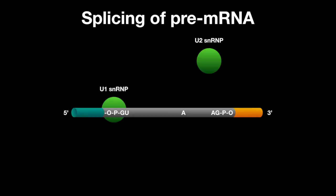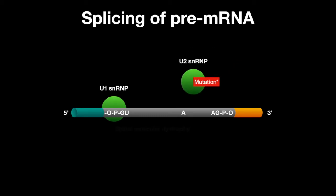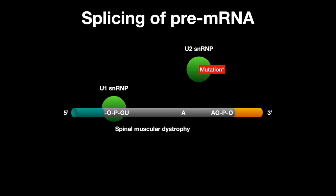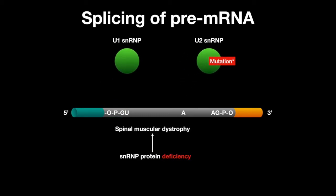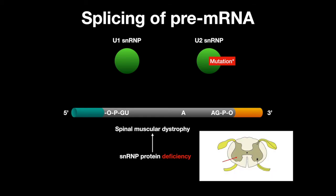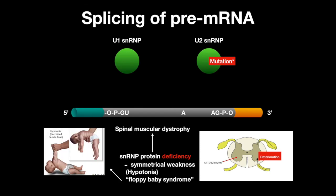Mutations in the SNRNP assembly can be detrimental. Spinal muscular atrophy is a condition due to SNRNP protein deficiency. This results in congenital degeneration of the anterior horns of the spinal cord, which leads to symmetric weakness of the body. This is called hypotonia, or floppy baby syndrome.